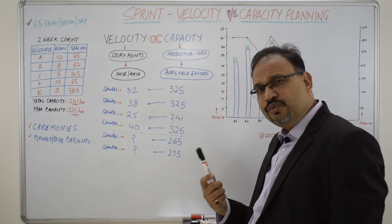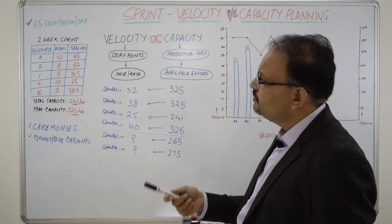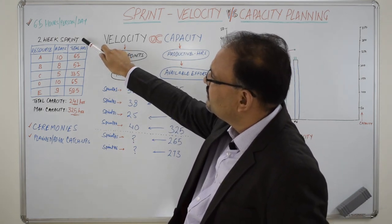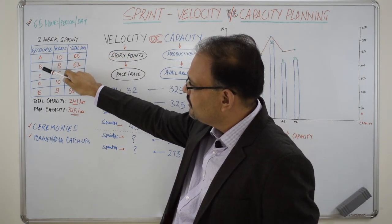Let's see one example. How do we do the capacity planning? Let's assume there is a 2 week sprint that is 10 days. There are 5 resources A, B, C, D, E.